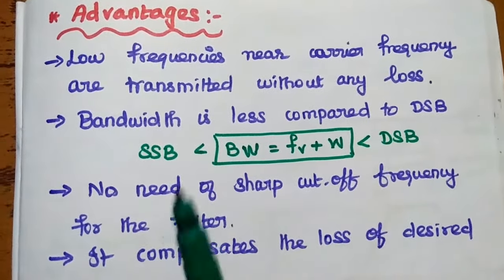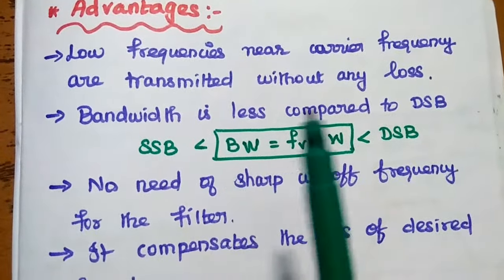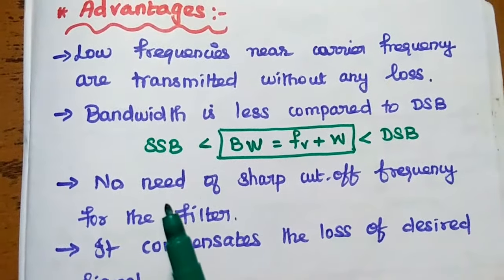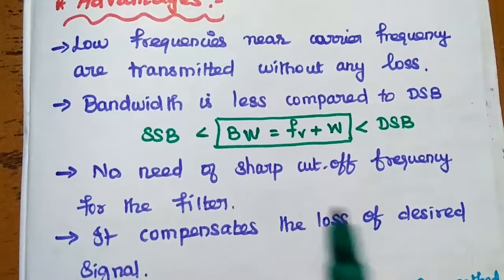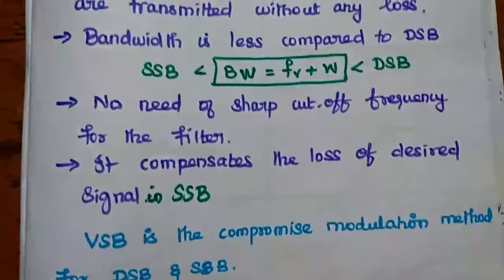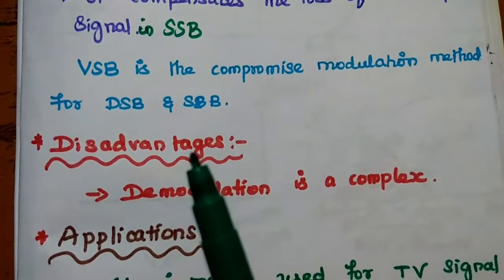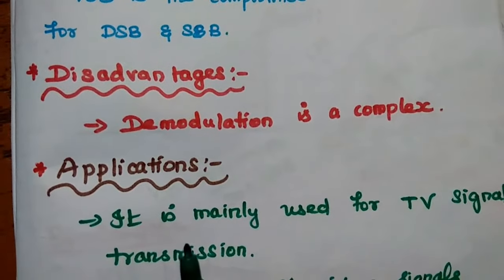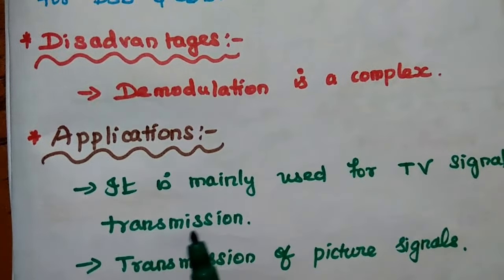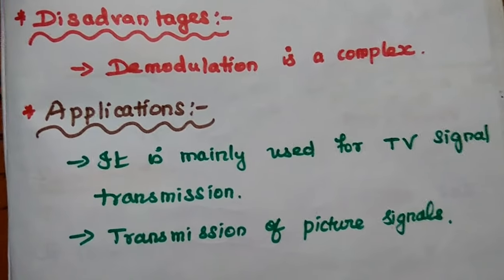Advantages of VSB: low frequencies near the carrier frequency are transmitted without any loss; bandwidth is less compared to double sideband, lying between double sideband and single sideband; there is no need for sharp cutoff frequency filters; it compensates the loss of the desired signal in SSB. VSB is the compromise modulation method between DSB and SSB. The major disadvantage is that demodulation is a somewhat difficult process. Applications: VSB is mainly used for television signal transmission and transmission of picture signals.